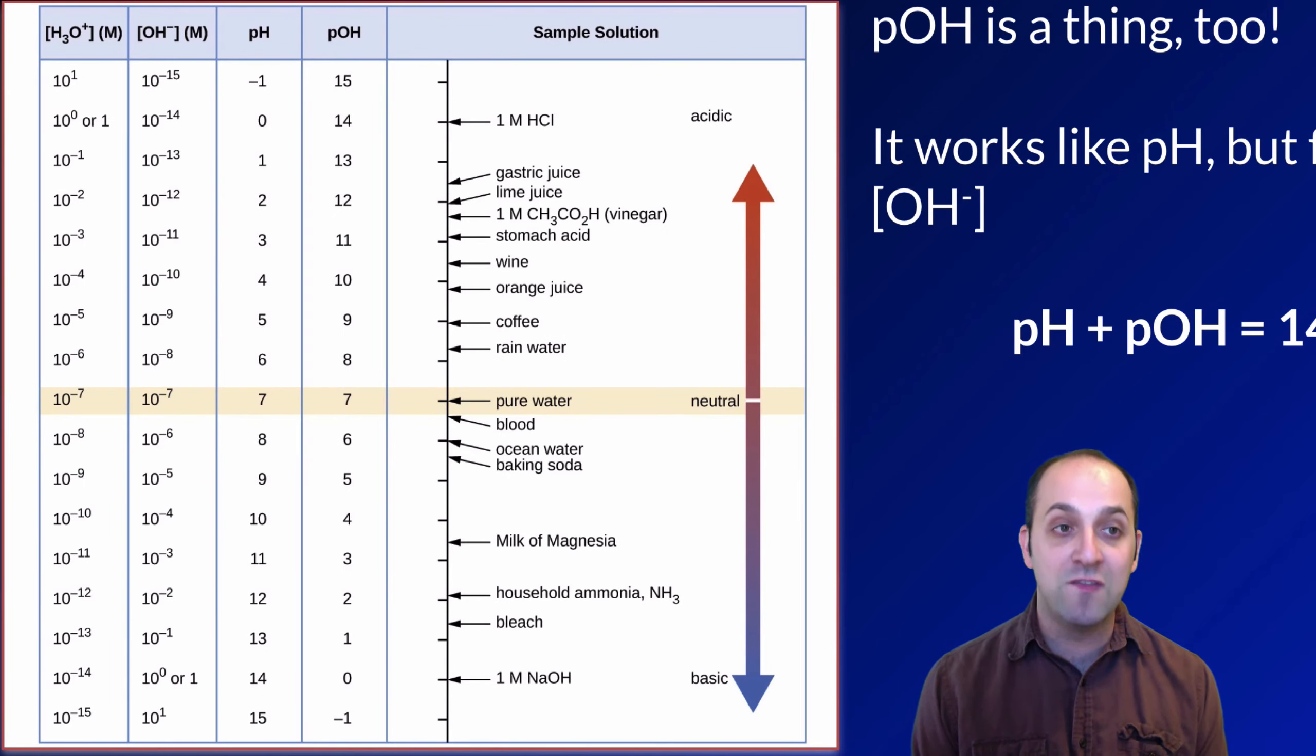What this diagram shows you is the pH value and the pOH value of different solutions. And you can see that in each case, pH plus pOH equals 14, and the concentration of hydronium ions times the concentration of hydroxide ions equals 10 to the negative 14. Does this make sense? If it doesn't, write down any questions that you have before we move on.